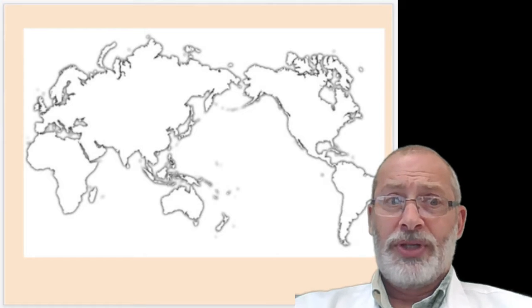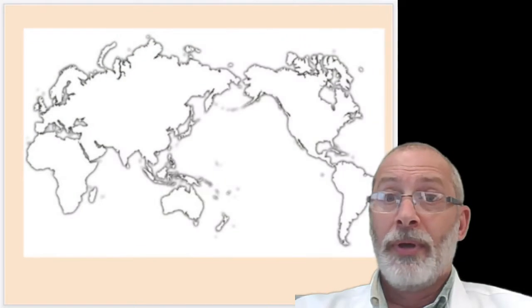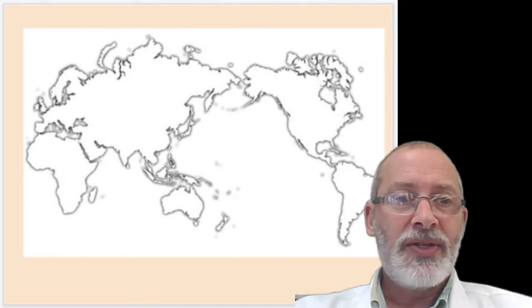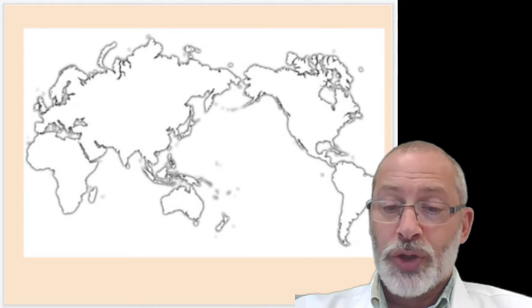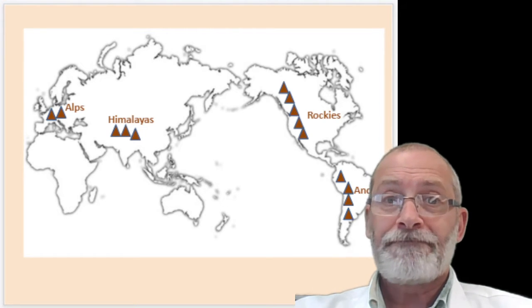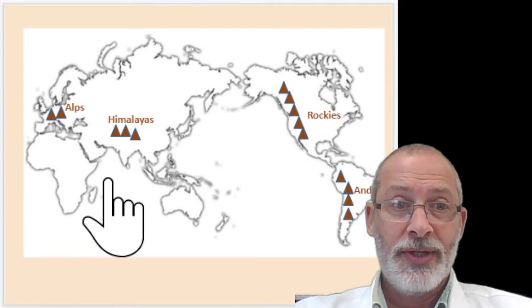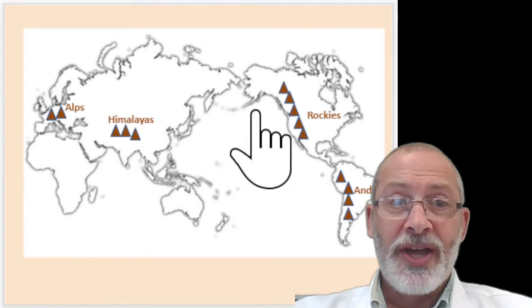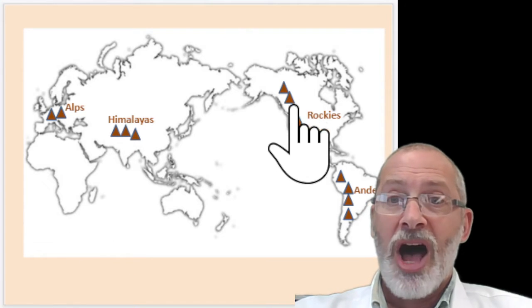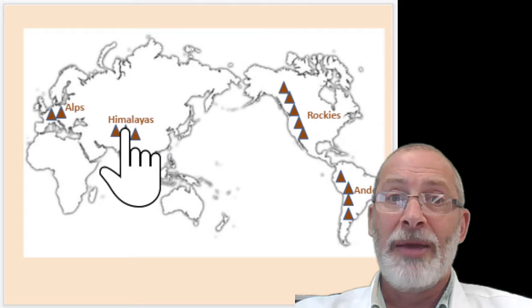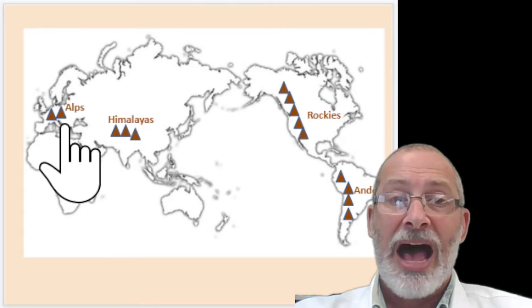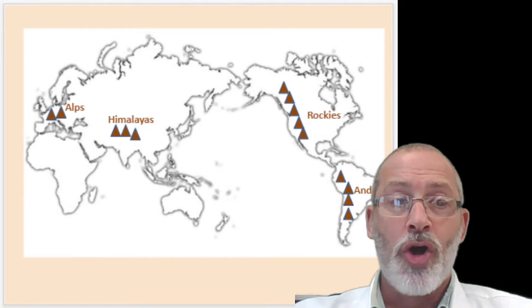You're going to be using your other maps in your book to help identify the locations of various things on this world map, including the major mountain ranges. Notice I've drawn the Rockies, the Andes, the Himalayas, and the Alps — you're going to be drawing the location of the mountain ranges.